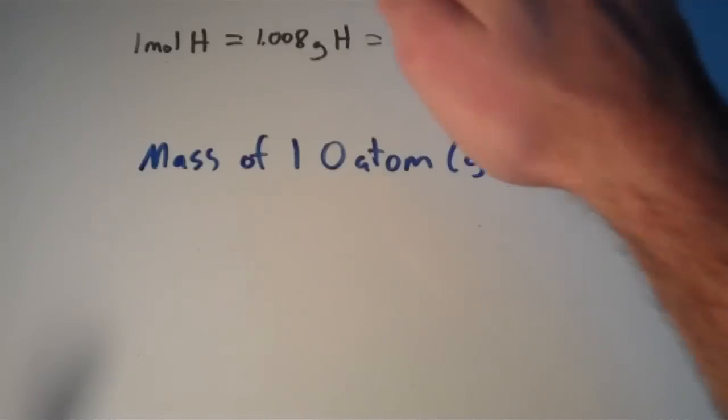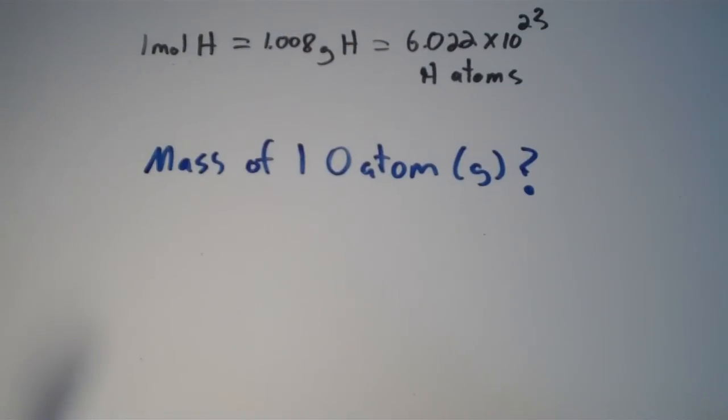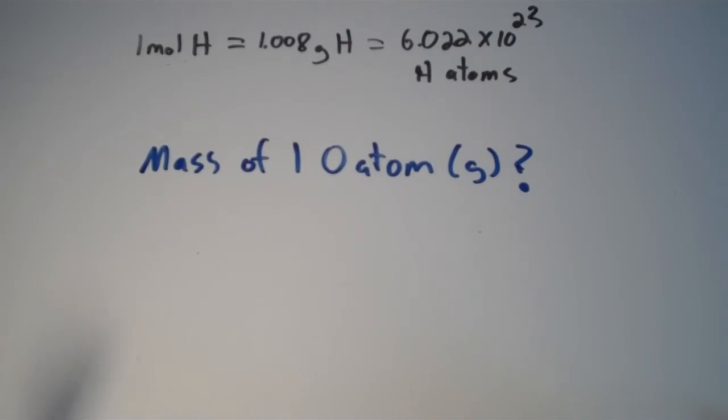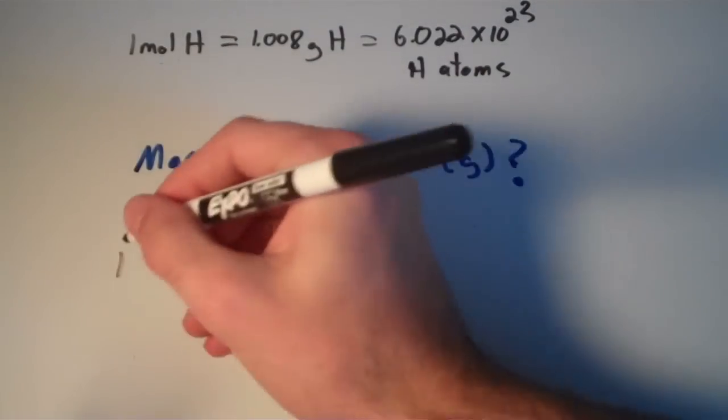So we want to use these conversion factors up here, these equivalent quantities, at least now for oxygen, to figure out the mass of one oxygen atom in grams. So we start out with one oxygen atom.